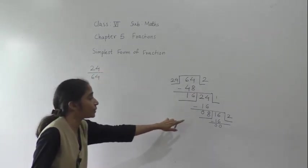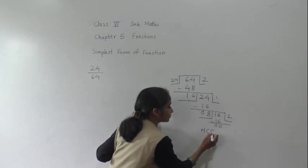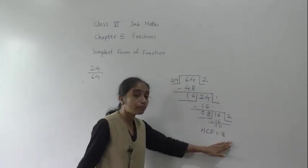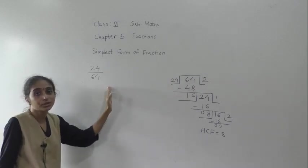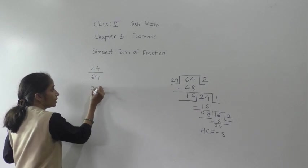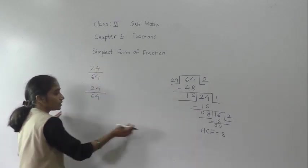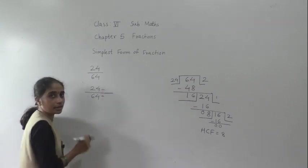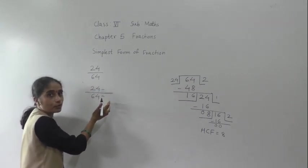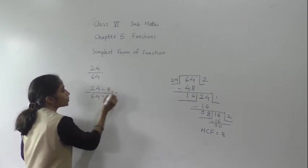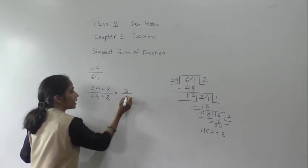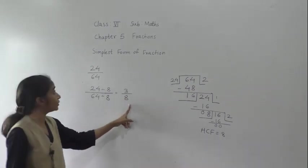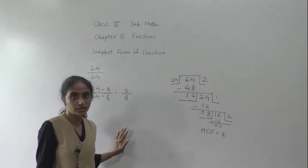So 8 is the HCF. The last divisor is the HCF. For this given fraction, we have to divide both the numerator and the denominator by 8. So 8 threes are 24 and 8 eights are 64. This way we can find the simplest form of the fraction using the HCF method.